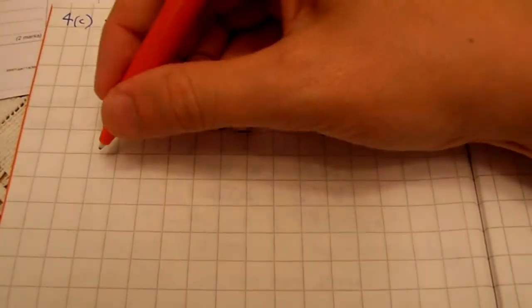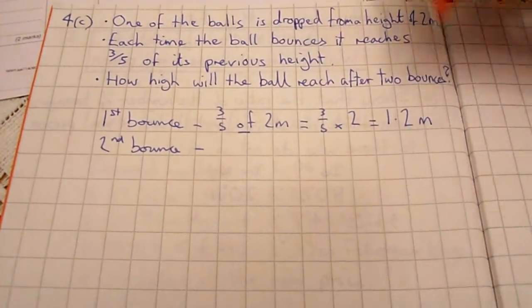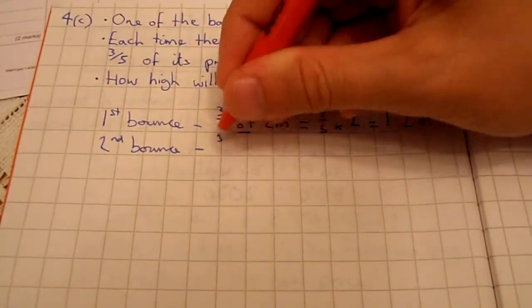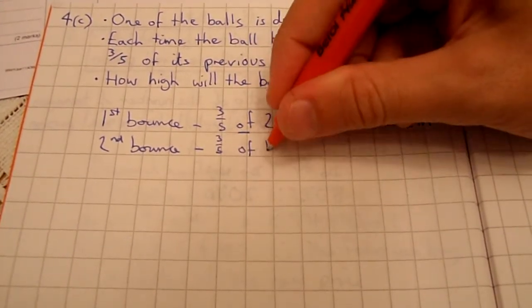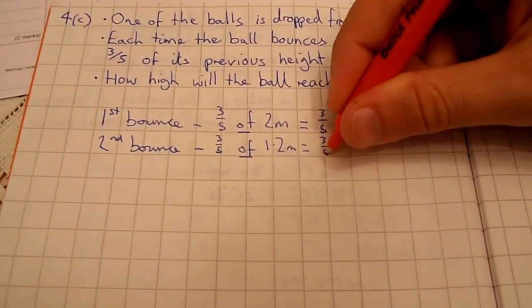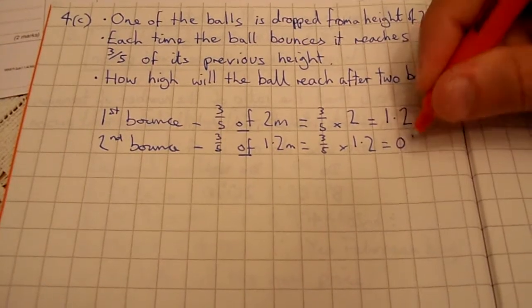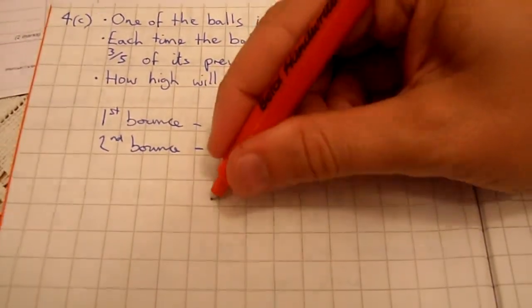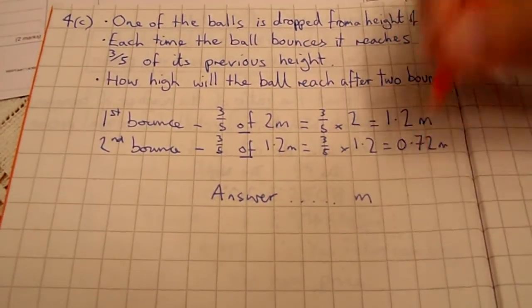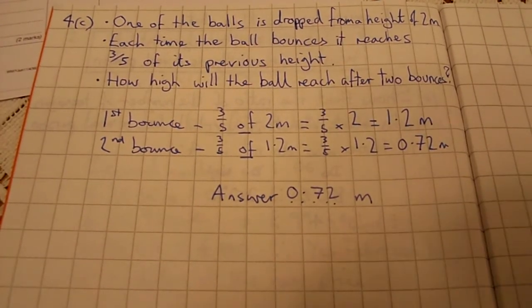The second bounce, we are starting this time with a height of 1.2 meters because the ball has bounced. We need to calculate three-fifths of 1.2 meters. Again, there's that 'of' word, so we're going to multiply: three-fifths times 1.2, which gives us 0.72 meters. Remember to give your answer in the units they specify on this paper. Make sure it's 0.72 meters, not 72 centimeters. This is an easy two marks.